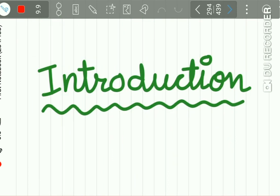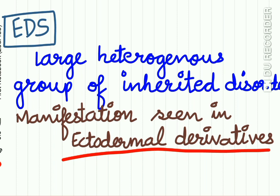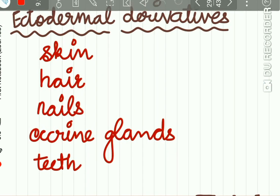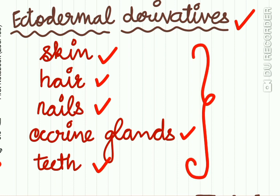Ectodermal dysplasia is a large group of heterogeneous inherited disorders. Its manifestations are seen in ectodermal derivatives — those tissues which originate from the ectoderm show disorders in ectodermal dysplasia. The ectodermal derivatives in the body include skin, hair, nails, eccrine glands, and teeth. All these tissues derived from the ectoderm are affected.